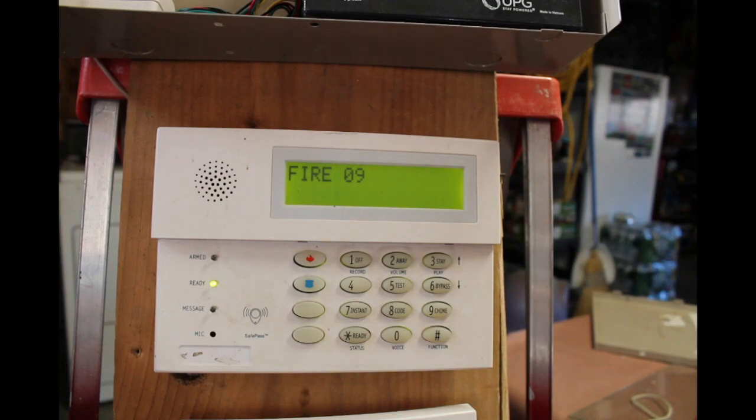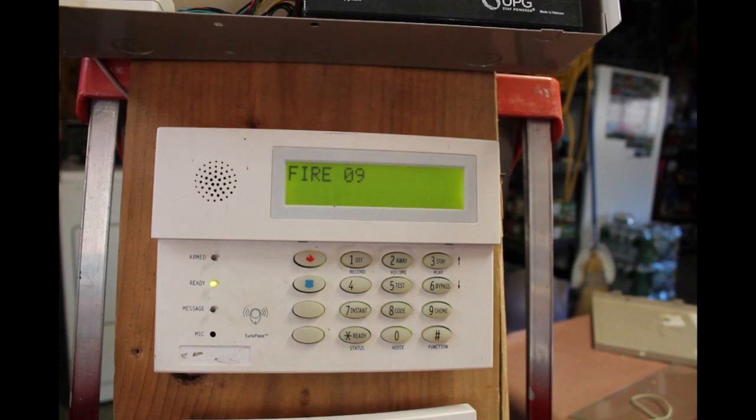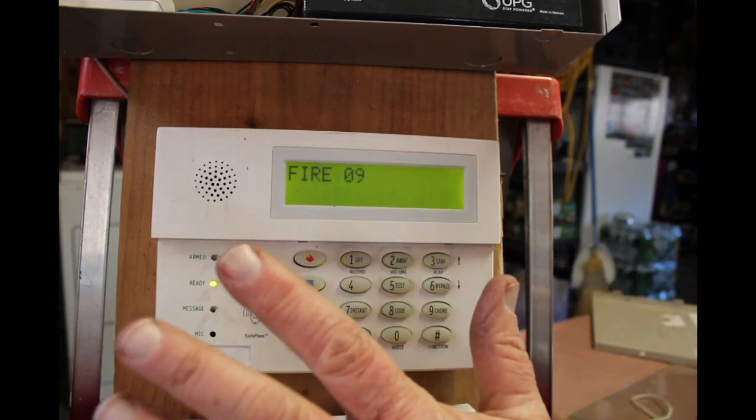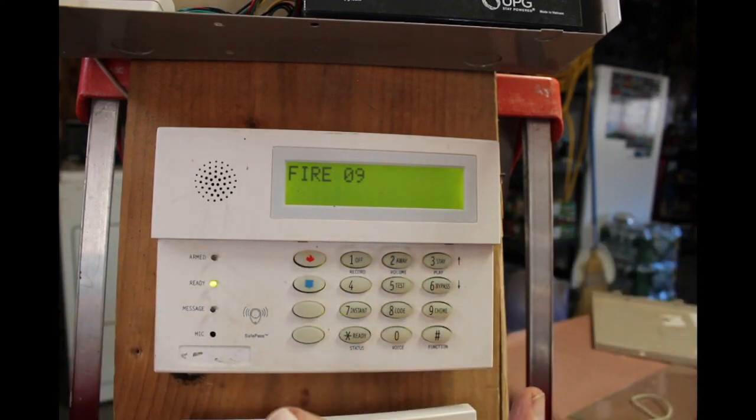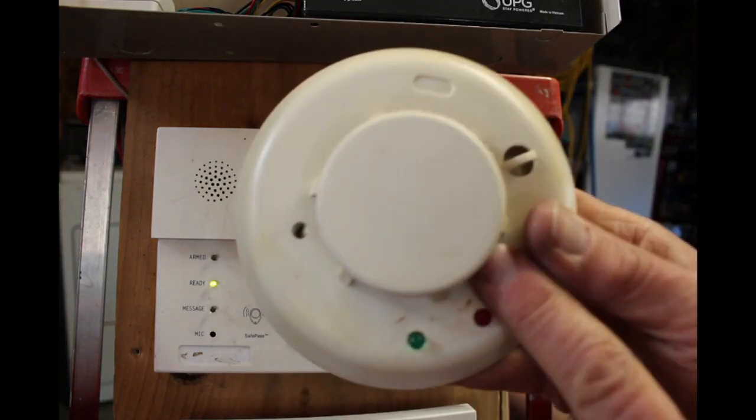Or whatever your code is. Mine's 1-2-3-4 because this is my demonstrator, so makes it a lot easier. So the first time that you hit the 1-2-3-4 off, it silences all the sirens and everything else. Okay, but the smoke detector out in your hallway where this is going off, this could possibly still be beeping.